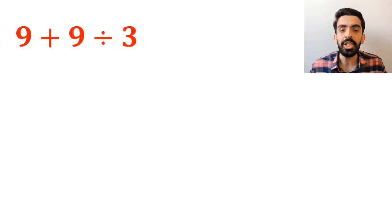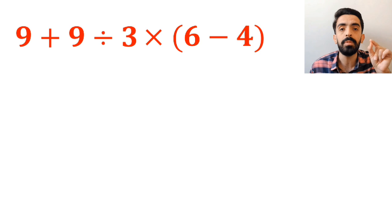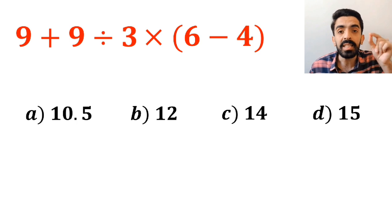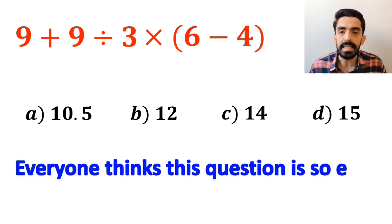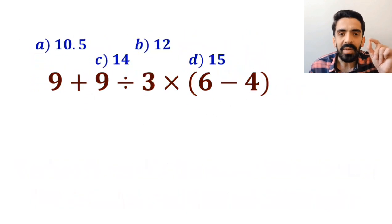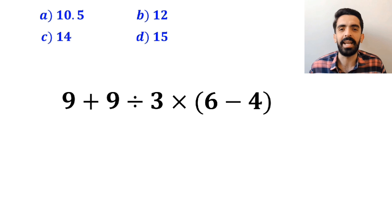What is the value of the expression 9 plus 9 divided by 3 times open parenthesis 6 minus 4 close parenthesis? Which option do you think is the correct answer to this question? Everyone thinks this question is so easy, but it actually tricks a lot of people. Let's dive in and crush it together.